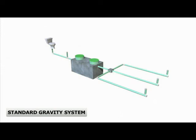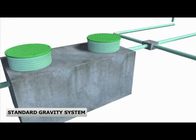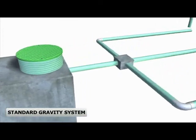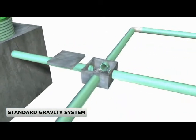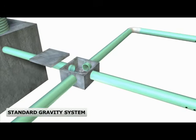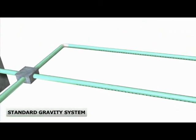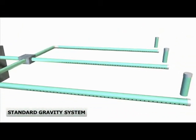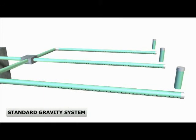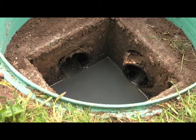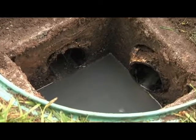The most common type of septic system is a gravity system, which consists of a septic tank and a drain field. Some standard gravity systems will have a distribution box. The effluent from the tank flows into a distribution box, or D-box, that splits the fluid between a series of perforated pipes buried in trenches filled with sand or other drainage material. The distribution box ensures the water flows evenly into the different pipes.